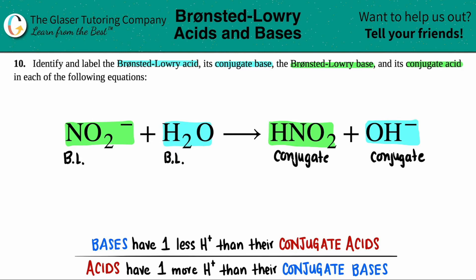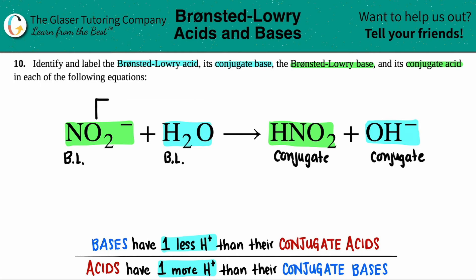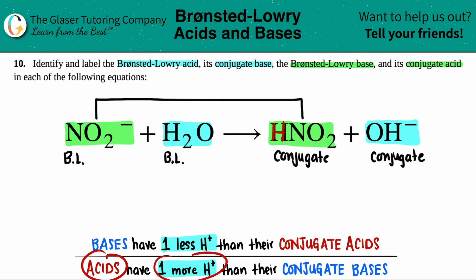Now let's figure out which one is the acid and which one is the base. As a quick tip: acids will always have one more H+ than their conjugate bases, and bases will always have one less hydrogen. So let's pick the green pair: NO2 minus versus HNO2. NO2 minus has no hydrogens; HNO2 has one hydrogen. The acid always has one more, so HNO2 has to be the acid out of the pair, and therefore NO2 minus has to be the base.